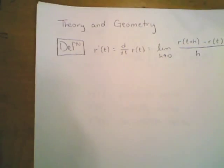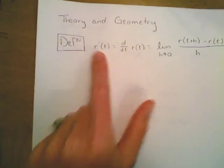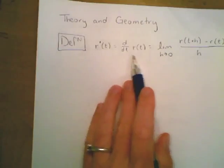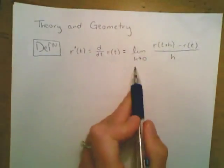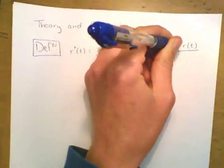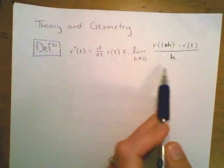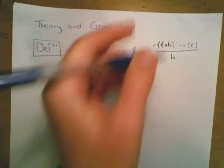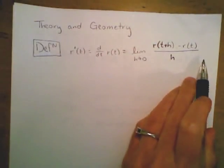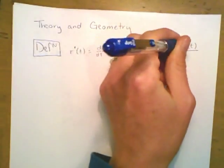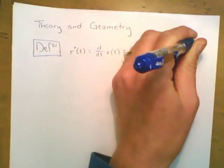Next, let's look at some theory and geometry of vector-valued functions. By definition, r prime of t — the derivative of a vector-valued function r — can be written in Leibniz notation as d/dt of r of t, and it equals the limit as h approaches 0 of r of t plus h minus r of t, all divided by h. This difference quotient is exactly what we saw in Calc 1 — the only difference is we're using a vector-valued function and the input is the parameter t, which typically stands for time.